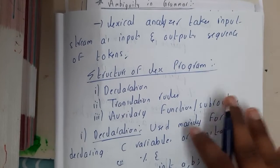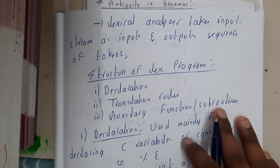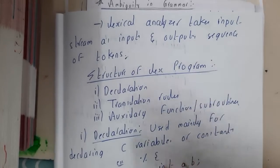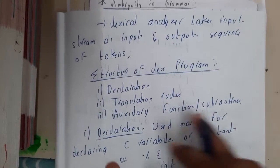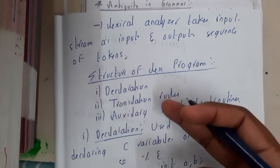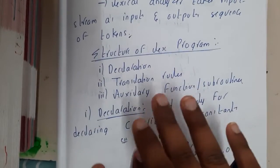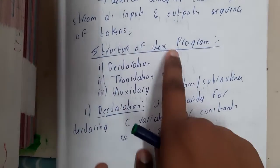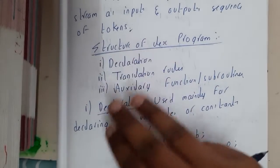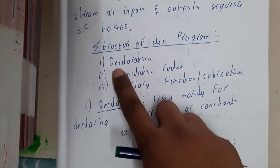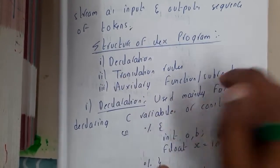Now you might be confused about what Lex code looks like and how to write code in Lex. So first let us go through the structure, and then I'll take an example to make it clear. The structure of a Lex program has three blocks: declaration, translation rules, and auxiliary functions.